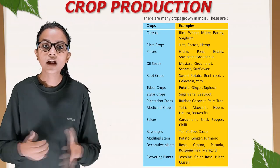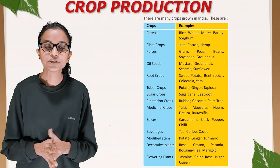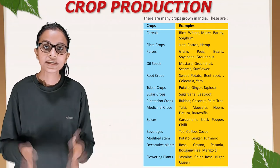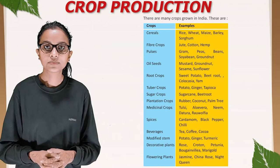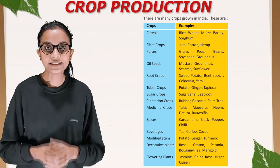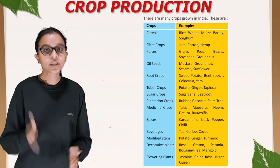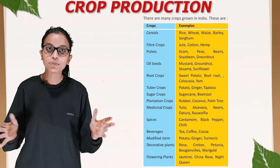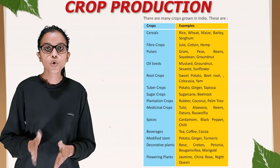There are many crops grown in India across different categories. Cereals: rice, wheat, maize, barley, sorghum. Fiber crops: jute, cotton, hemp. Pulses: gram, peas, beans, soya bean, groundnut. Oil seeds: mustard, groundnut, sesame, sunflower. Root crops: sweet potato, beetroot, colocasia, yam. Tuber crops: potato, ginger, tapioca. Sugar crops: sugarcane, beetroot. Plantation crops: rubber, coconut, palm tree. Medicinal crops: tulsi, aloe vera, neem, datura, rauwolfia.